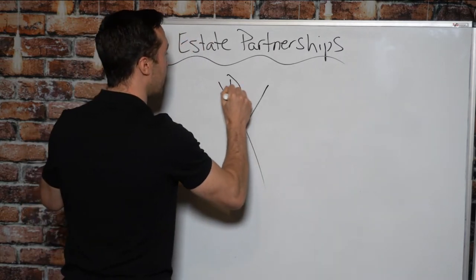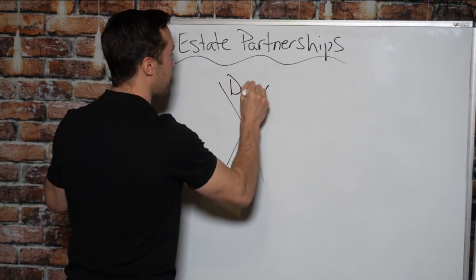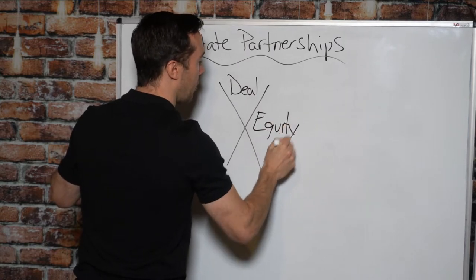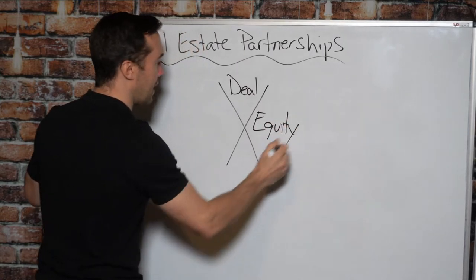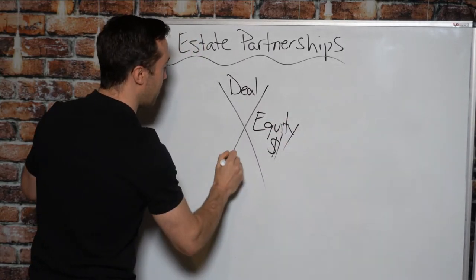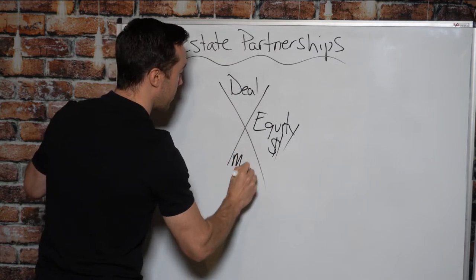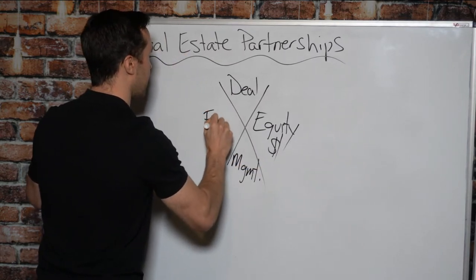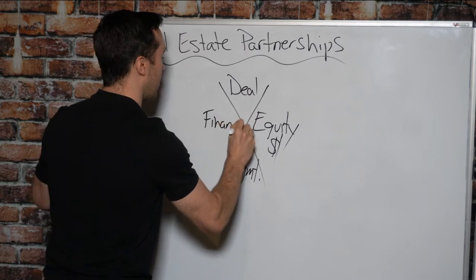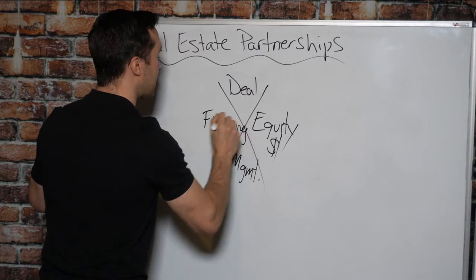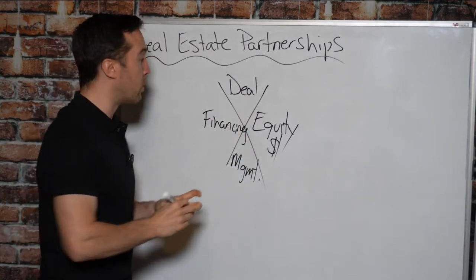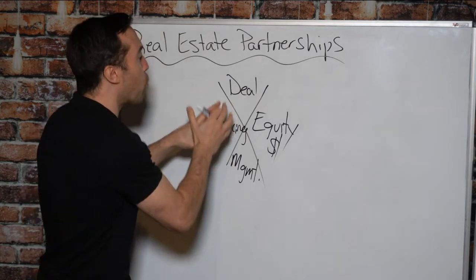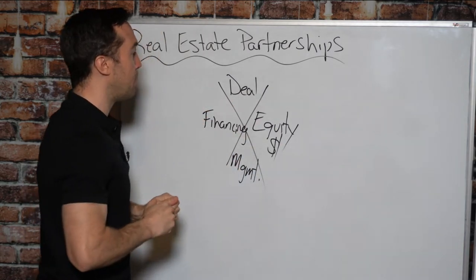The four components are: you have the deal itself, you have the equity or the capital, you have management, and then you have financing. As I said before, if a deal doesn't have one of these four things, the deal doesn't happen. This is what every single real estate investment is built on.